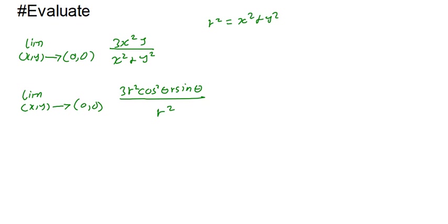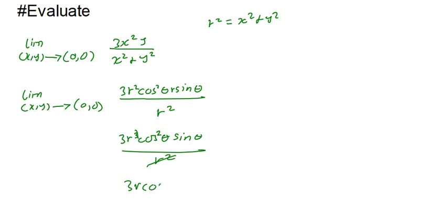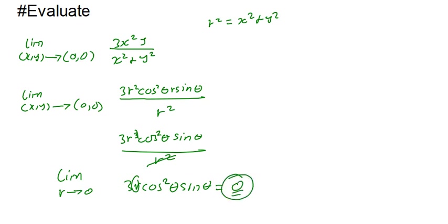After cancelling r², we get r · cos²θ · sinθ. We are now taking the limit as r → 0. Substituting r = 0 gives zero, so the limit equals zero.